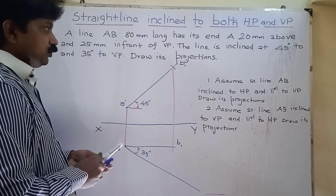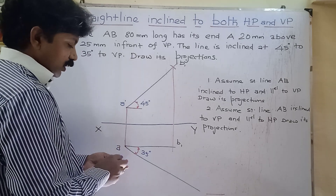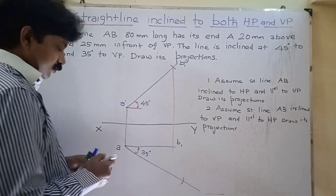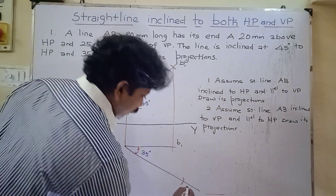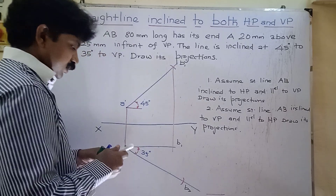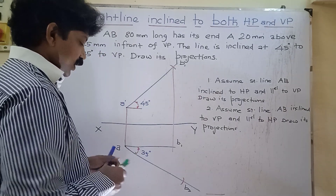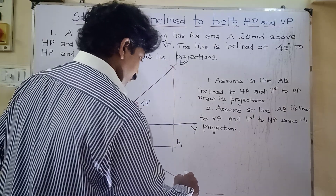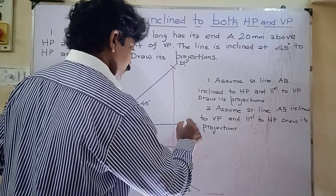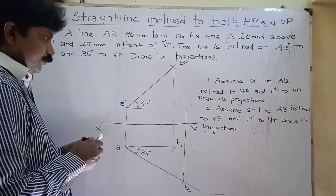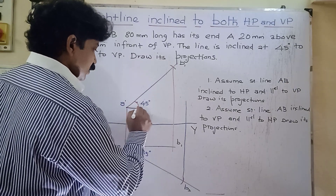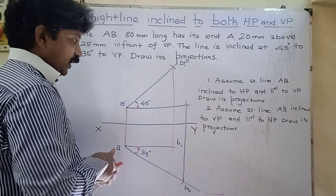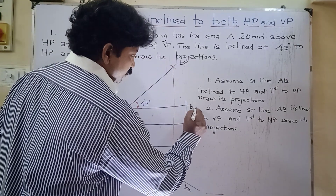Using compass with 80mm radius and point A as center, draw the arc. The arc cutting point is marked as B2. From B2, draw a vertical line using a two-edged pencil. Draw a horizontal line from A-dash, and the intersecting point is marked as B2-dash. Second step is now complete.